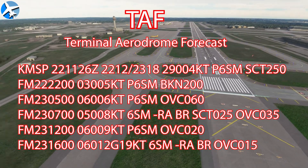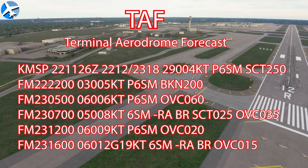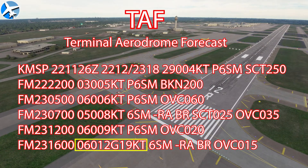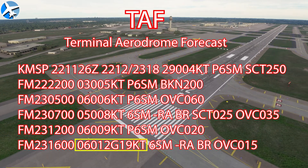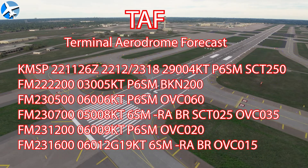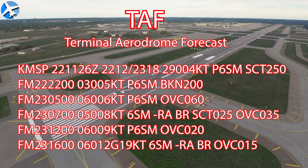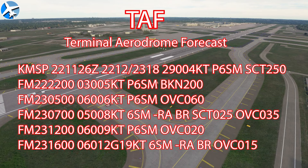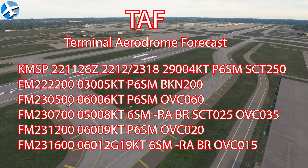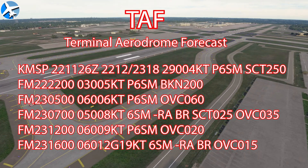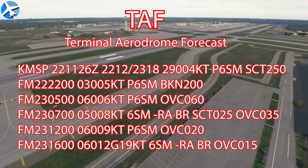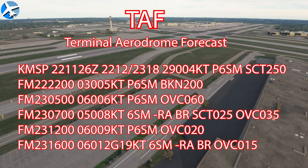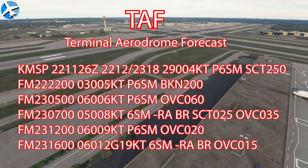Remember, the wind direction is the direction the wind is coming from. For example, on the bottom line the winds are 060 at 12 gusting 19 — if we turn and face 060, or northeast, the wind is going to be blowing in our face. Even though some weather reports give winds in true north, when tower gives you wind direction it's always magnetic, because runway headings are magnetic.